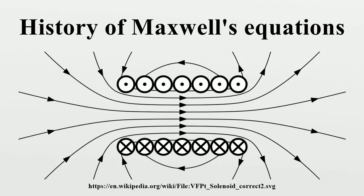In 1865 Maxwell published A Dynamical Theory of the Electromagnetic Field, in which he showed that light was an electromagnetic phenomenon. Confusion over the term Maxwell's equations sometimes arises because it has been used for a set of eight equations that appeared in Part 3 of Maxwell's 1865 paper, titled General Equations of the Electromagnetic Field, and this confusion is compounded by the writing of six of those eight equations as three separate equations, resulting in 20 equations and 20 unknowns.